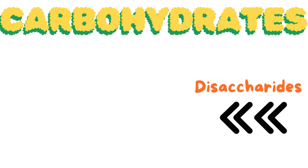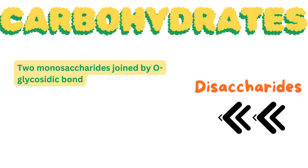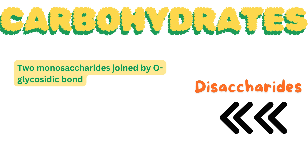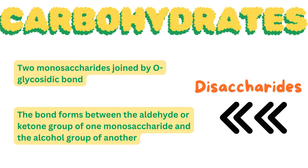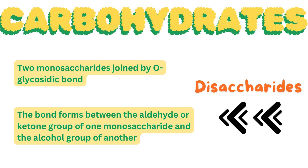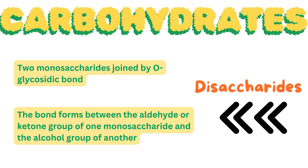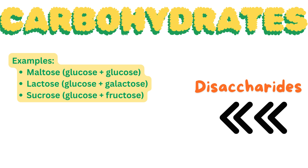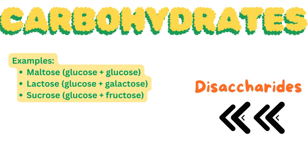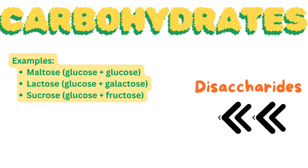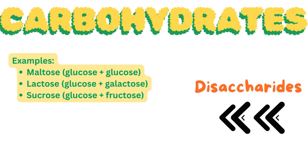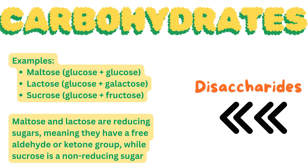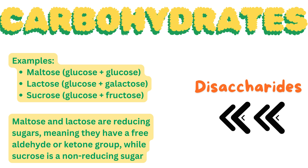When two monosaccharides join through an O-glycosidic bond, a disaccharide is formed. The bond forms between the aldehyde or ketone group of one monosaccharide and the alcohol group of another. Common disaccharides include maltose (two glucose molecules), lactose (glucose and galactose), and sucrose (glucose and fructose). Maltose and lactose are reducing sugars, while sucrose is a non-reducing sugar.